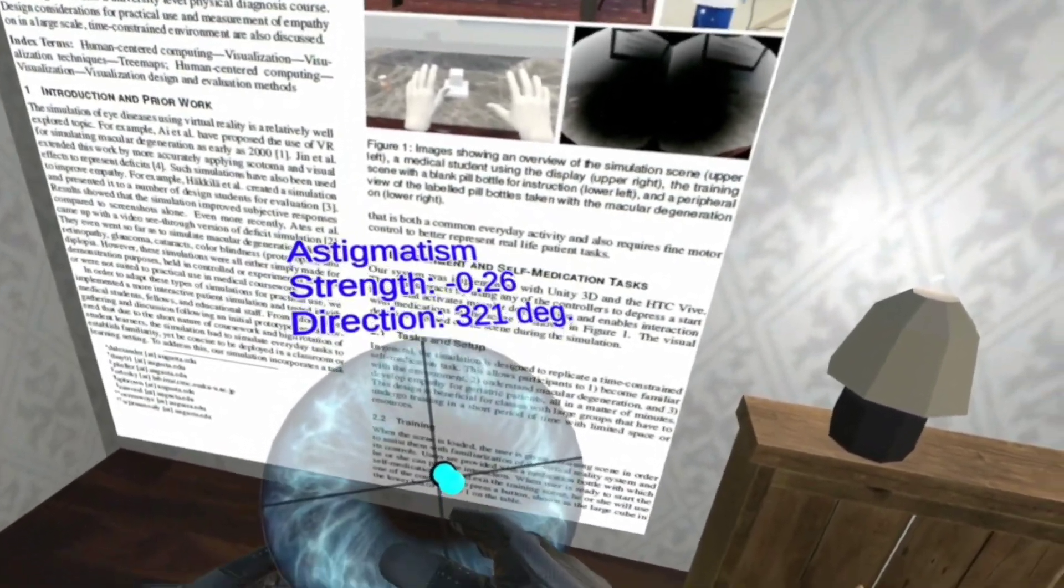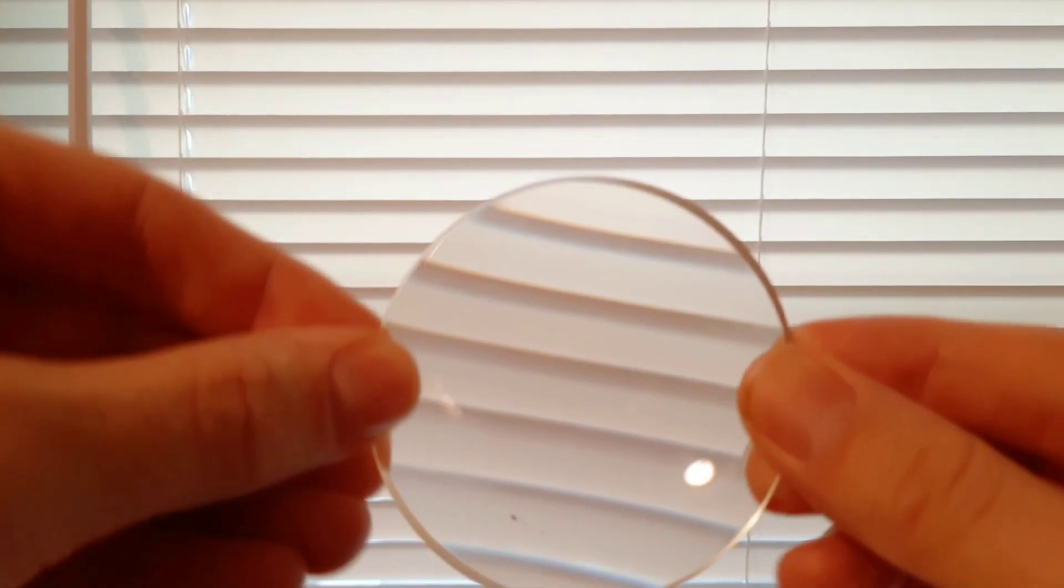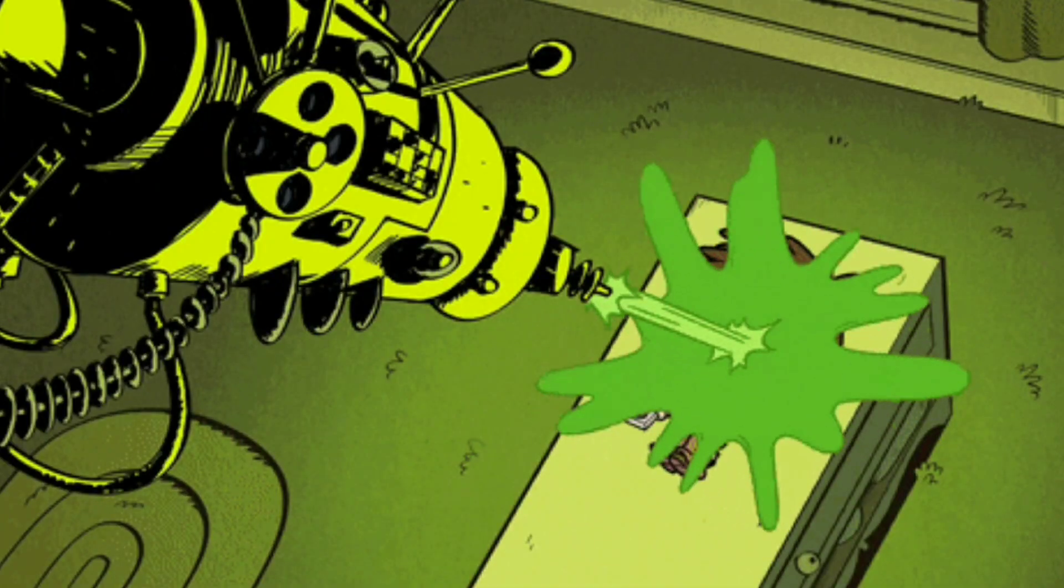I'll show simulations of what different levels of astigmatism look like, break down what's really going on in your eyes if you have this, and demonstrate exactly how glasses, contacts, and laser eye surgery correct for astigmatism.